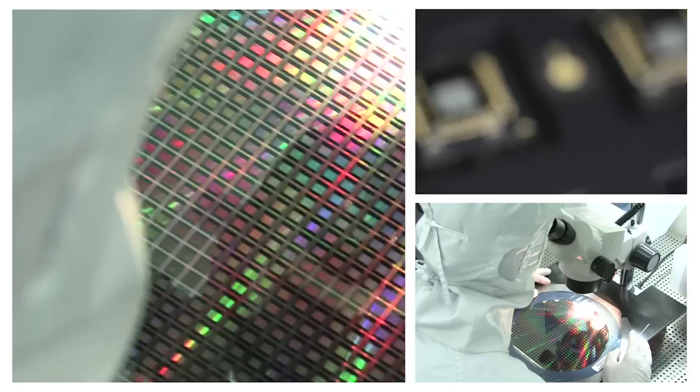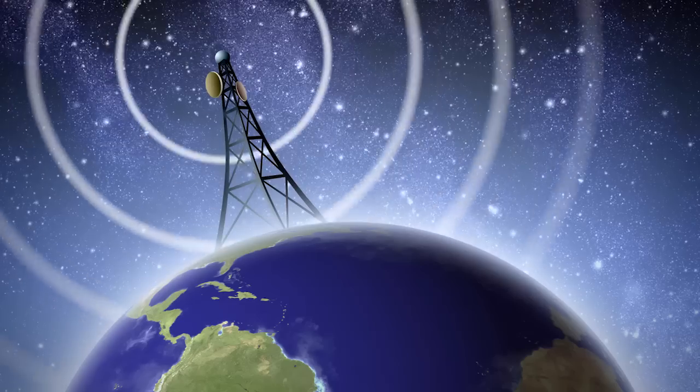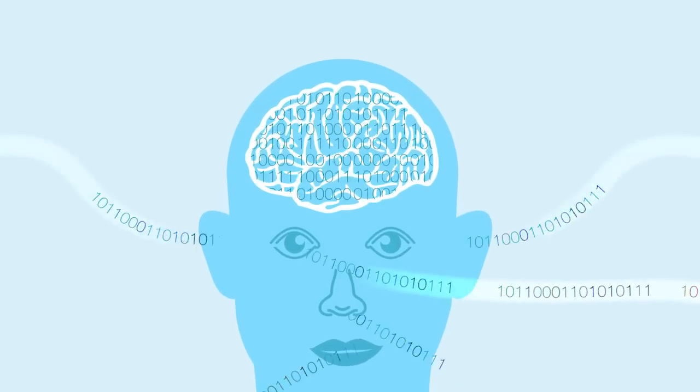We start by acquiring, or observing, the data we need. Information can come from all kinds of sources. Cameras, microphones, sensors, meters, you name it. Think of it like a human body taking in information through the eyes, ears, nose, mouth, and so on.